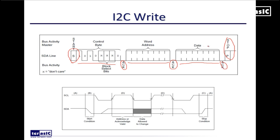Now what do I mean by start and stop? The start condition is basically when the SCL or clock is still high, the SDA or data line goes low and the clock then goes low — then we can start our data and address communication. That's known as the start condition. The stop condition is also very similar: the SCL signal goes high and then the SDA goes high.